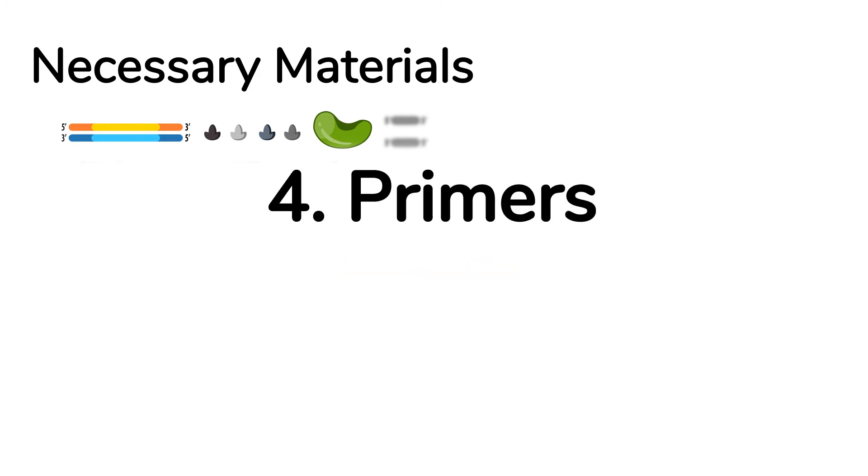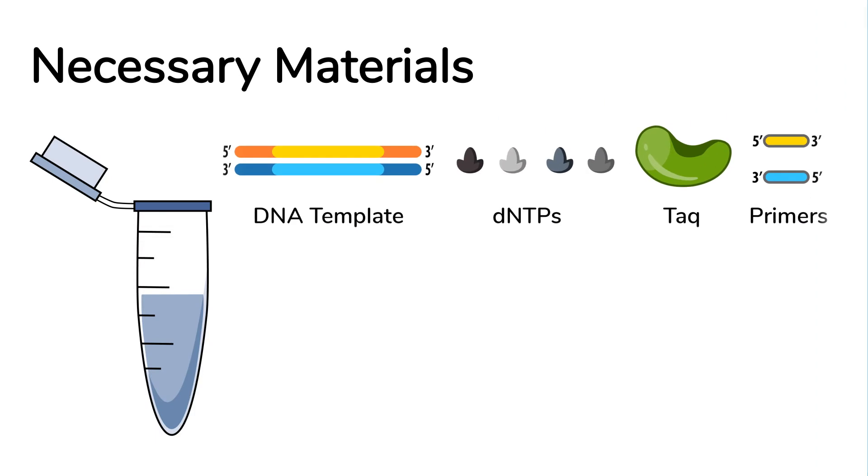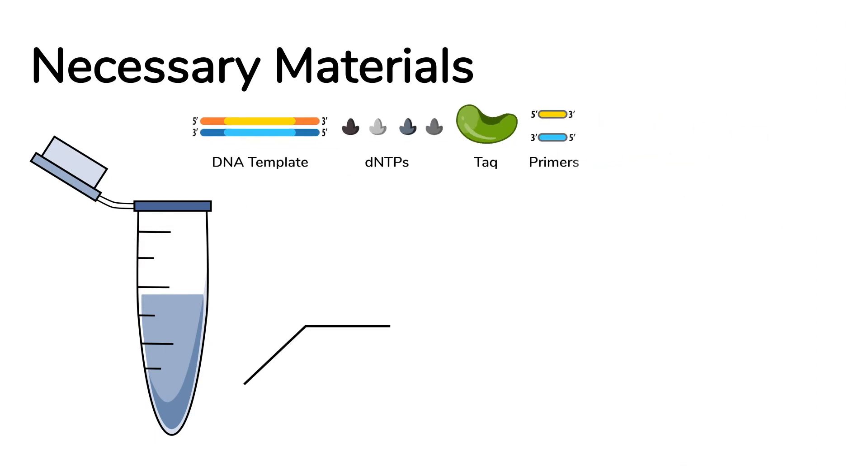Finally, we need to add a set of primers. Primers are short pieces of single-stranded DNA that are complementary to the ends of the DNA region that we want to amplify. All these reactants are combined into a test tube in PCR buffer.